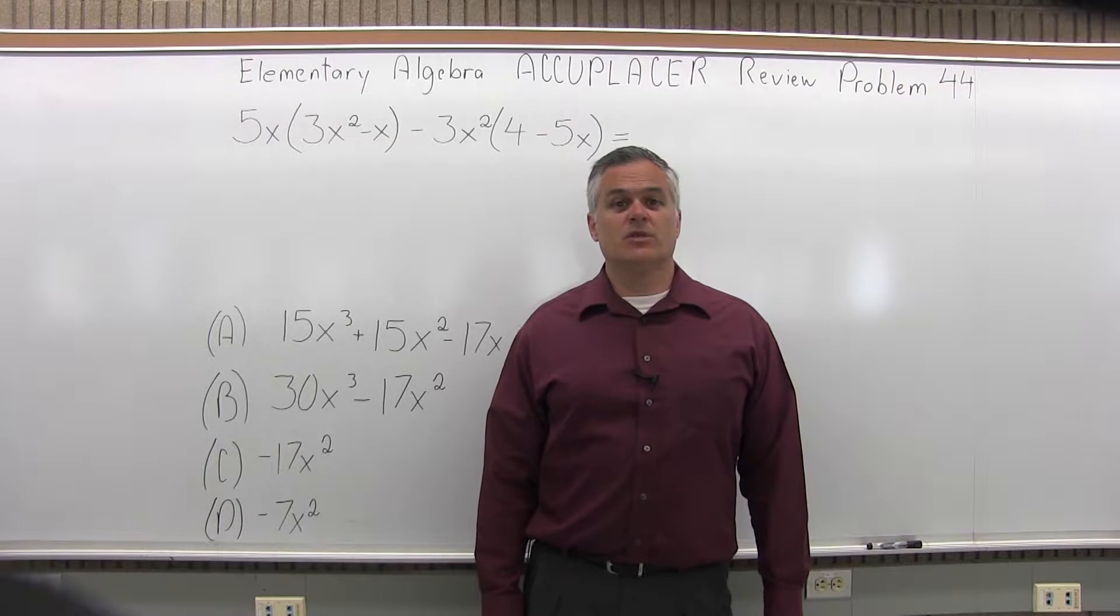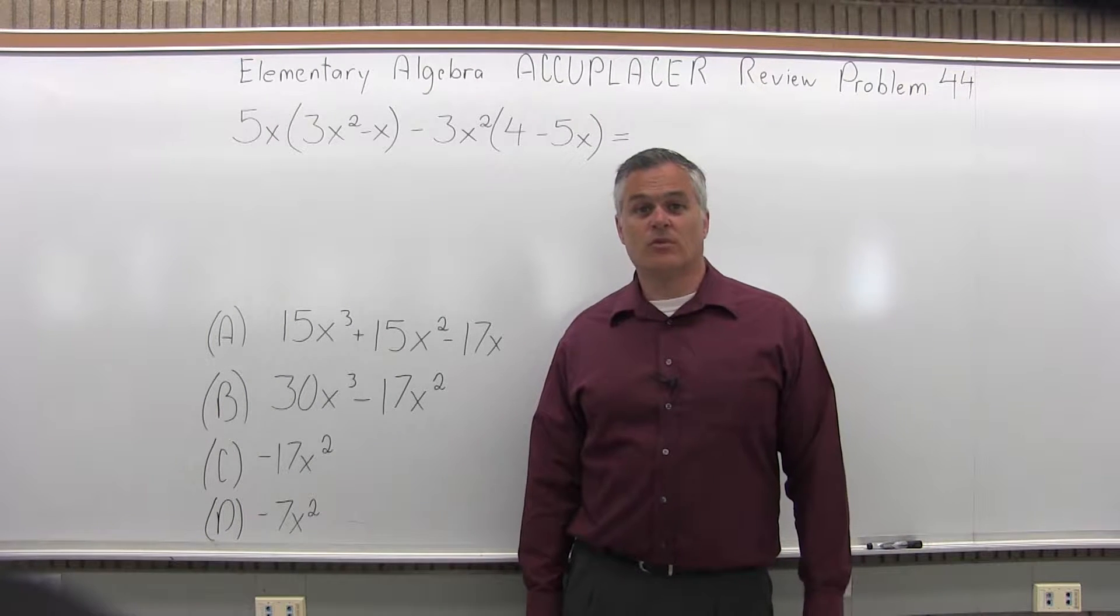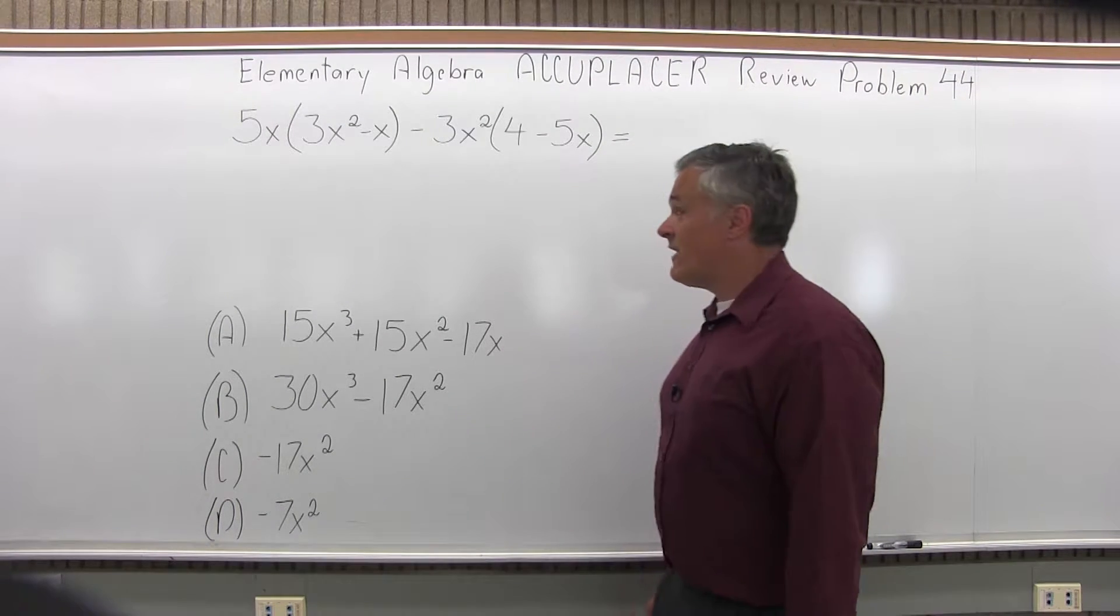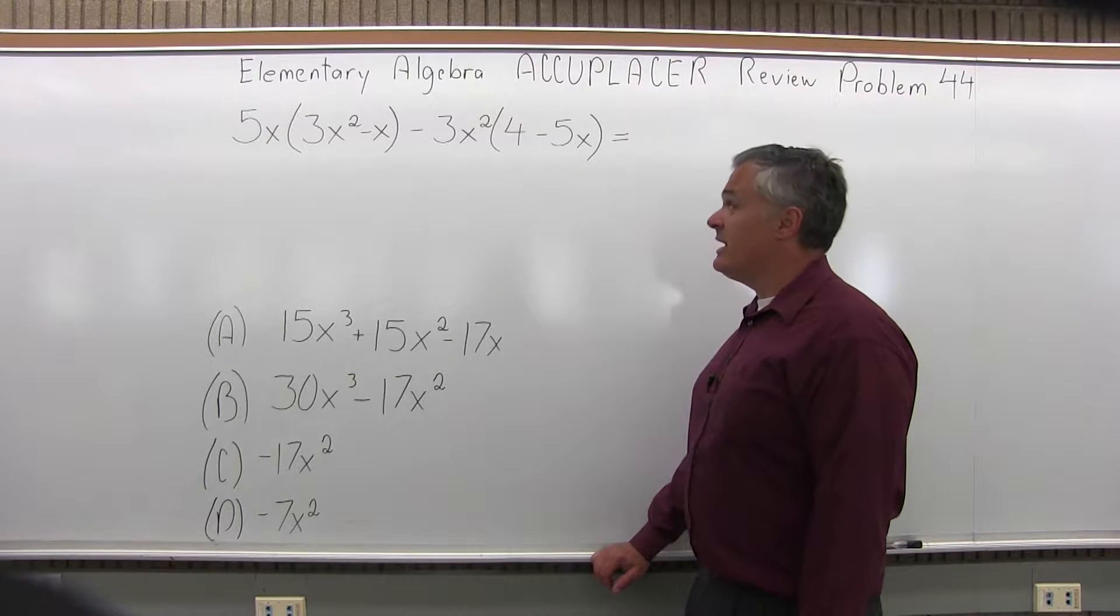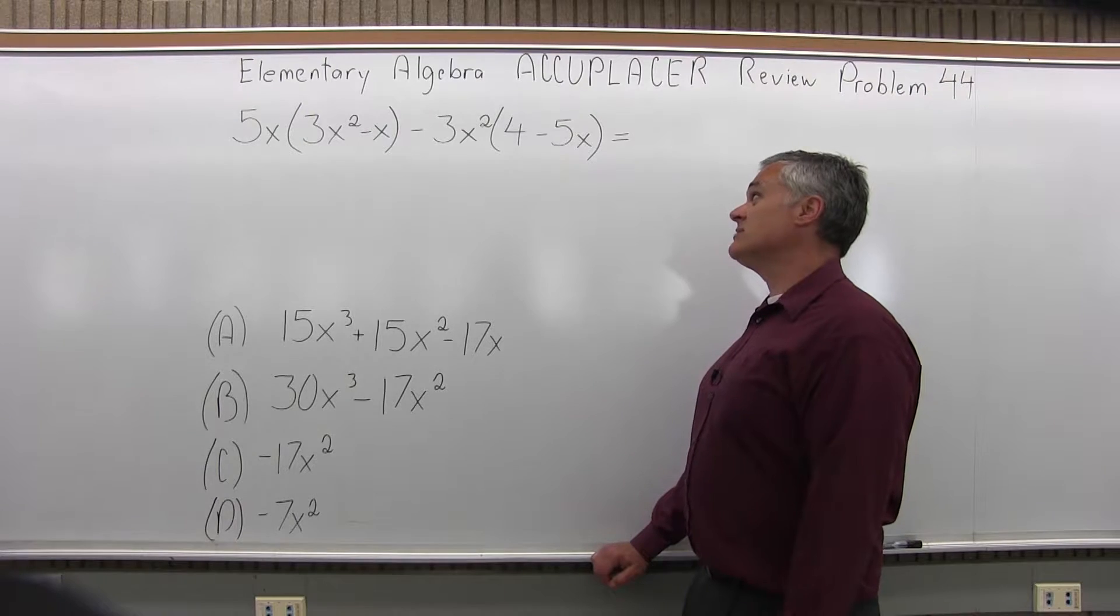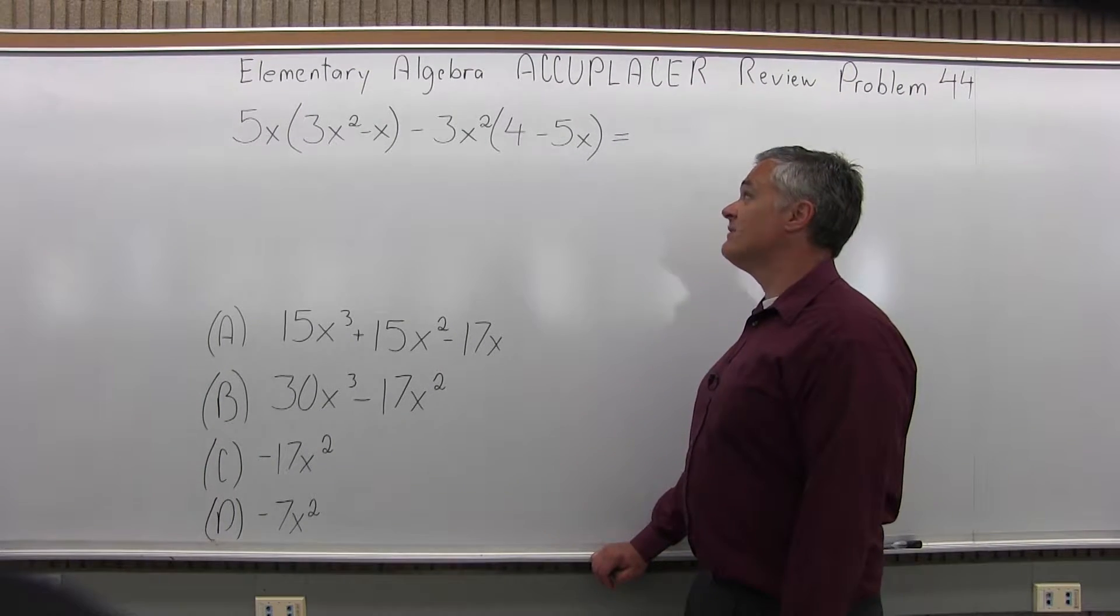This is the Elementary Algebra Accuplacer Review, Problem 44. We have 5x times in parentheses 3x squared minus x, and then minus 3x squared times in parentheses 4 minus 5x.